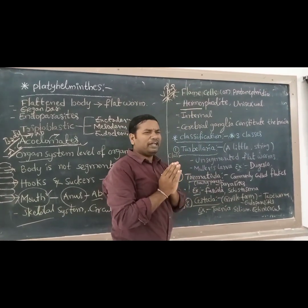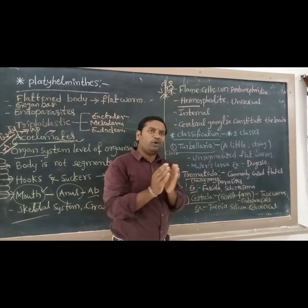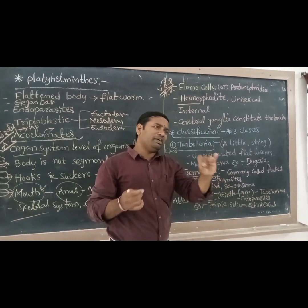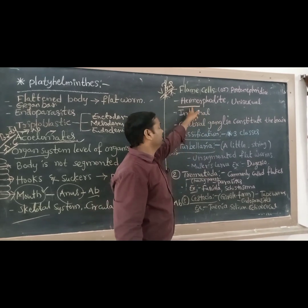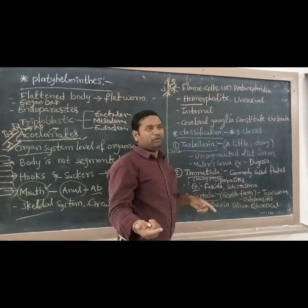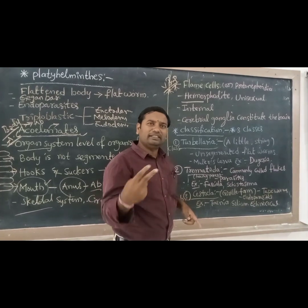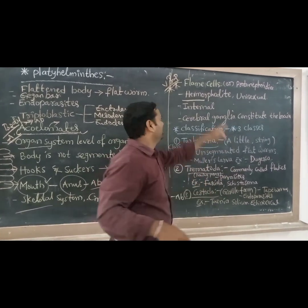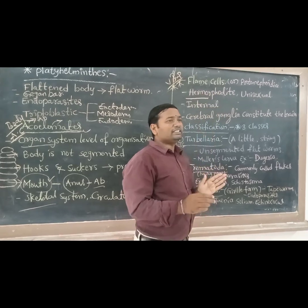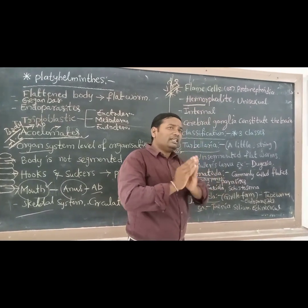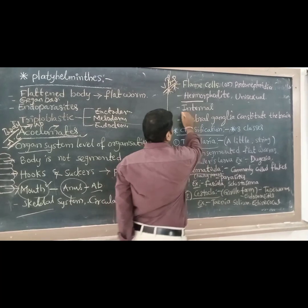They are hermaphrodites. Hermaphrodite means that both sexual organs are present — male and female sexual organs are present in one animal. Some groups have both male and female sexual reproduction present. Some are unisexual, meaning sexes are separate — either male or female.